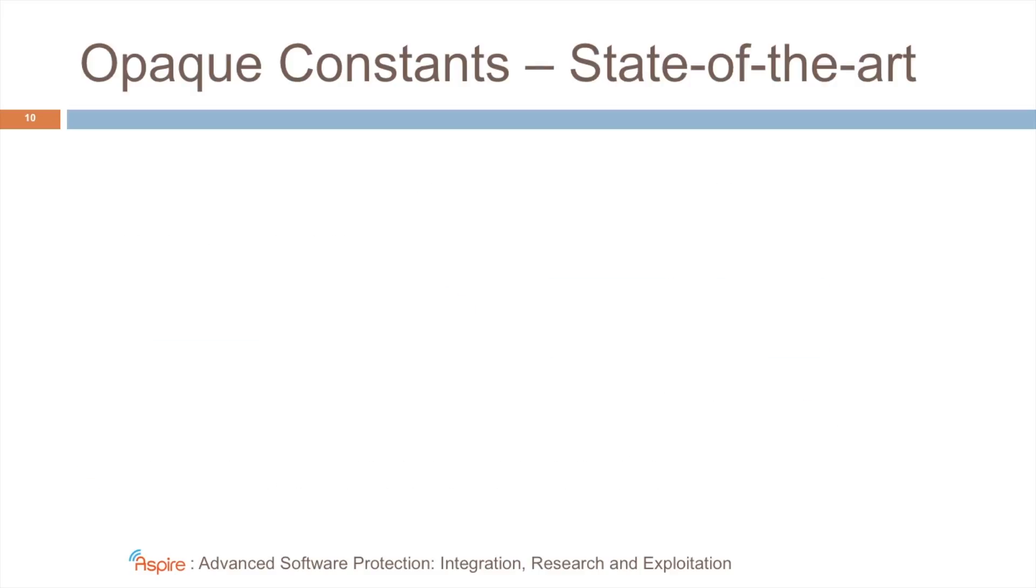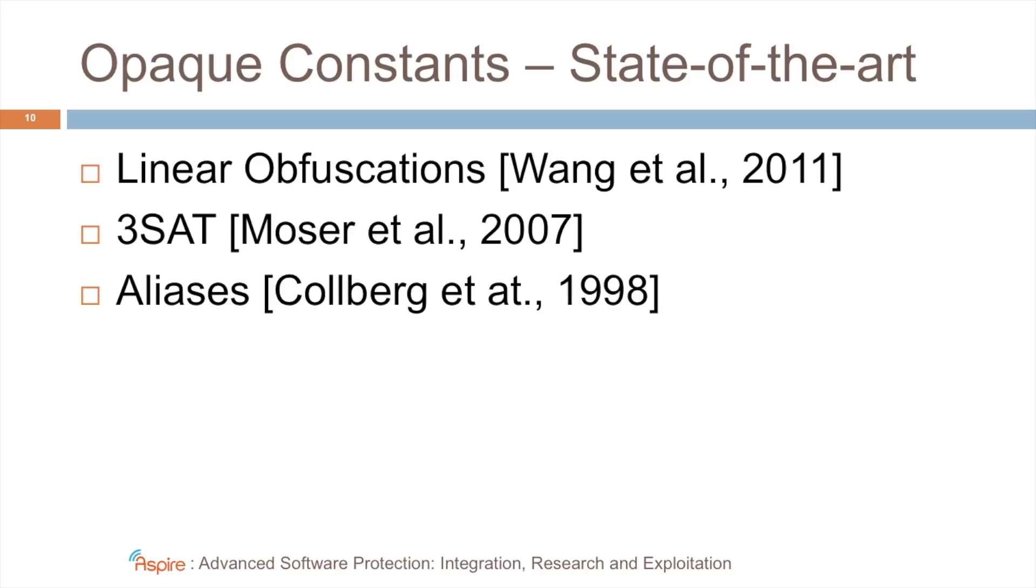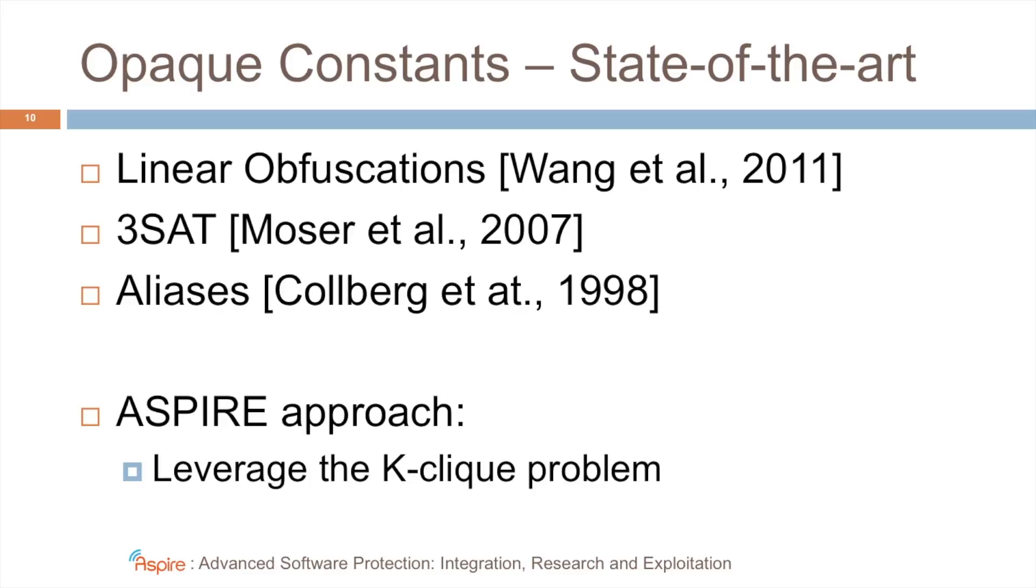Techniques to do so have been investigated in the past, so there exists some state-of-the-art. But when we studied these techniques, we discovered that they are in fact not very resilient to automated attacks. For example, the freely available CLI tool can be used to attack the approach by Mosaic et al. In ASPIRE, we think we've developed a more resilient approach, and in that approach we leverage the K-CLIQUE problem.